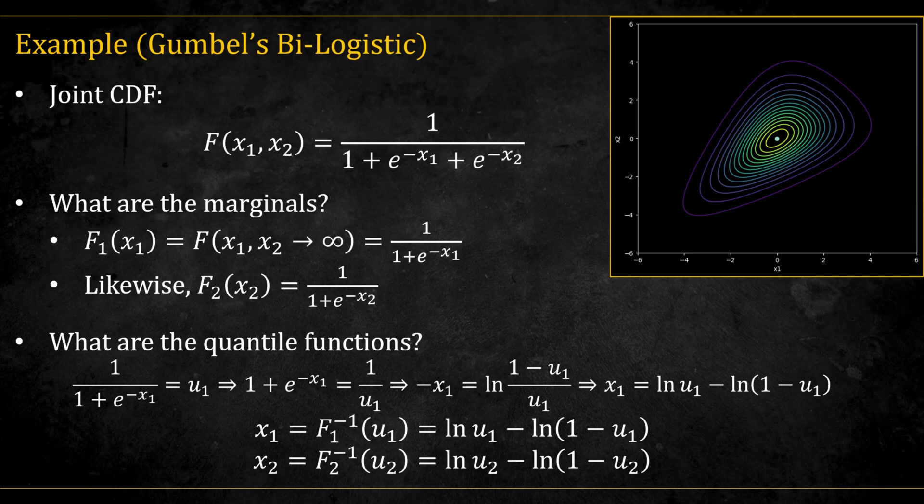In the image you can see the joint PDF, but the formula shown here is for the CDF. The first thing we need to do is to find the marginals. This is rather easy. We take each variable to infinity. So if we plug it in, we see that this term goes to zero, and we are left with this, which we can also identify as the CDF of a standard logistic distribution.